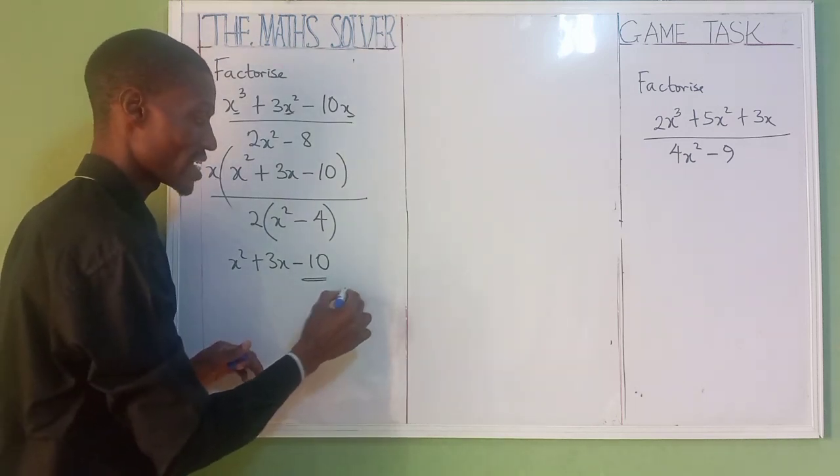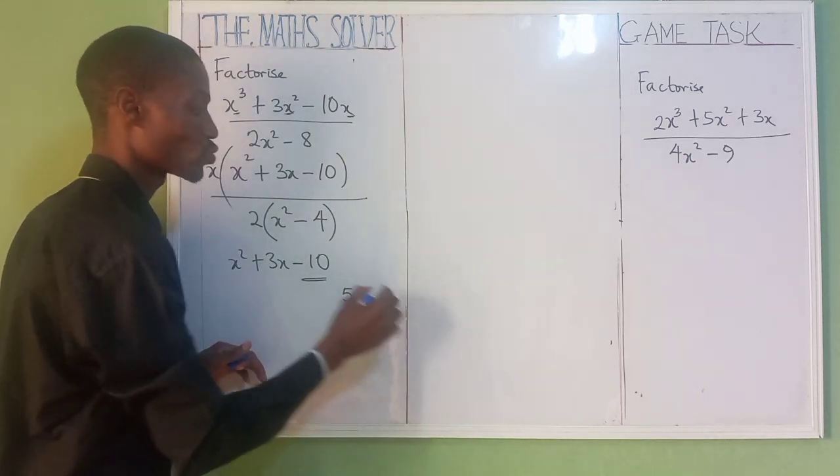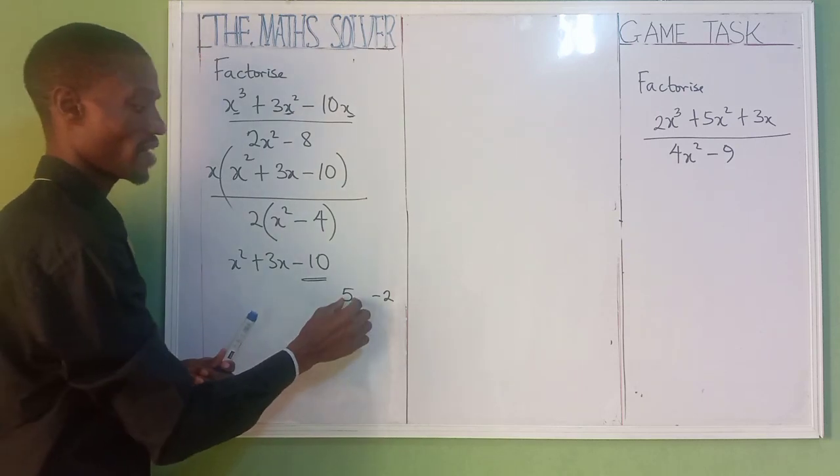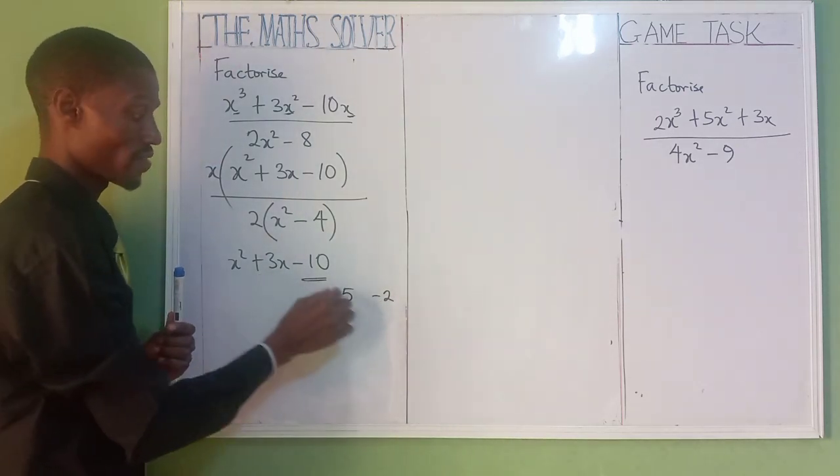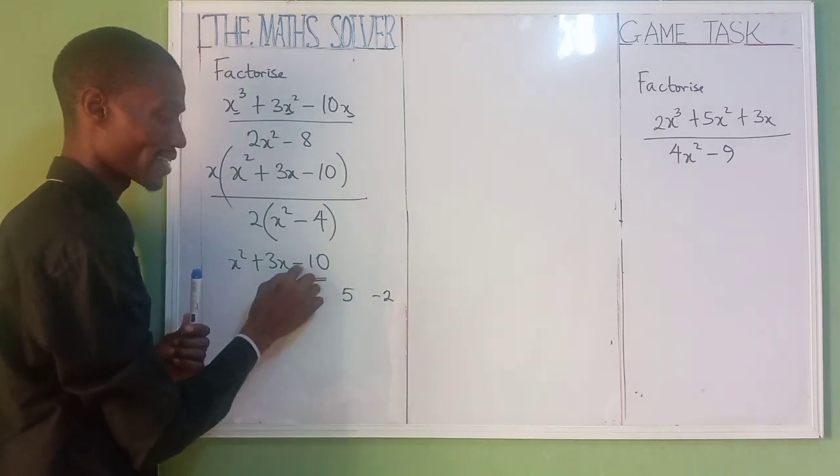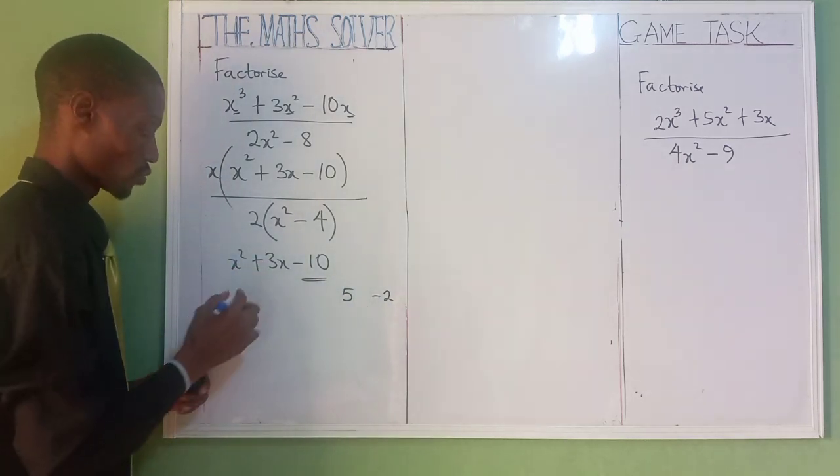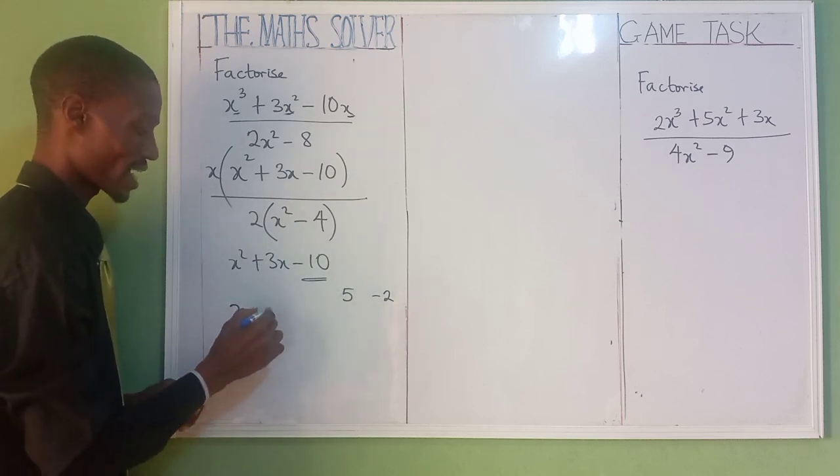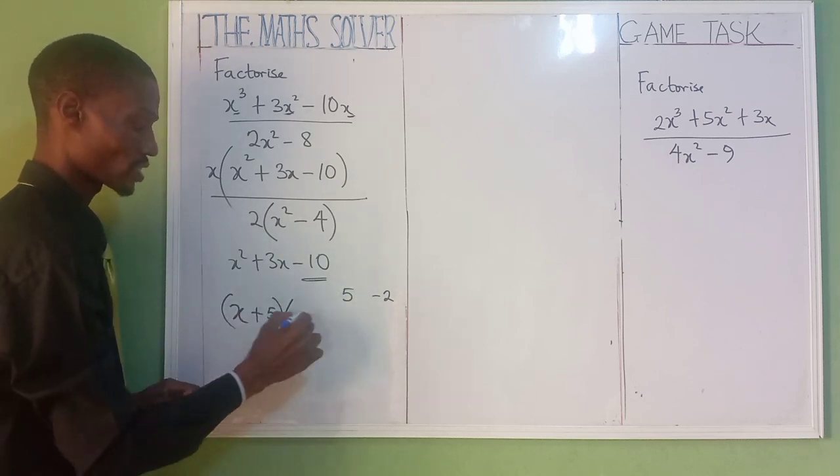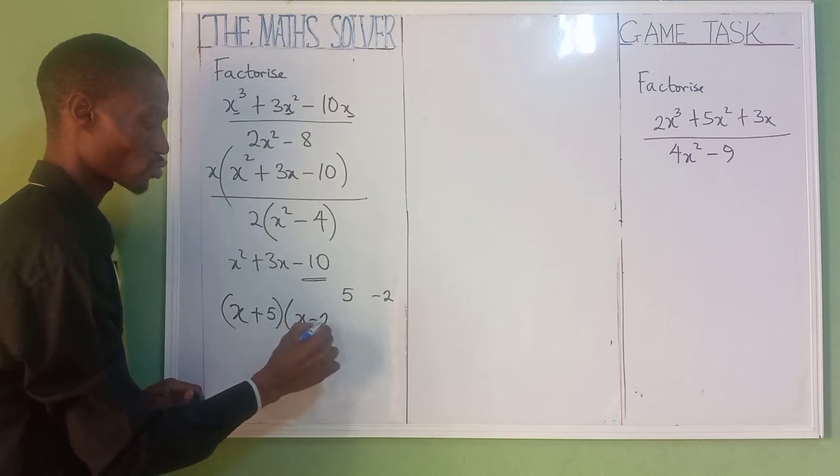We are going to have 5 and minus 2. What do I mean by that? 5 minus 2 gives us 3. 5 times minus 2 gives us minus 10. So what's the answer now? It would be (x + 5) and the next one is (x - 2).